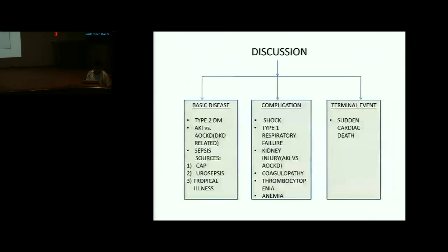Discussion focused on the basic disease of Type 2 DM, acute-on-chronic kidney disease possibly due to diabetic kidney disease, and sepsis with likely sources being community-acquired pneumonia and urosepsis based on pyuria. Tropical illness was also considered given the October presentation with anemia and thrombocytopenia. Complications included shock, Type 1 respiratory failure, AKI, coagulopathy, thrombocytopenia, and anemia.